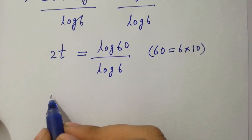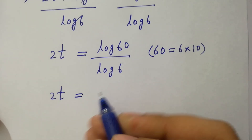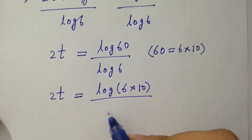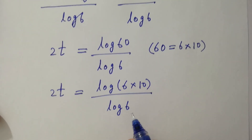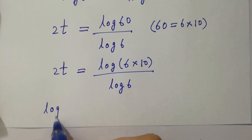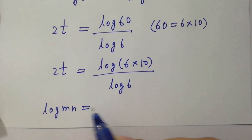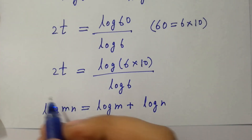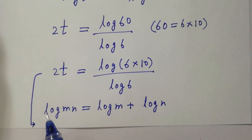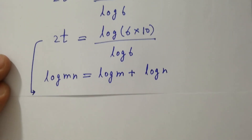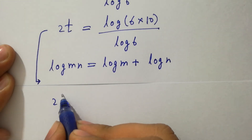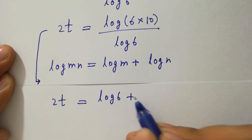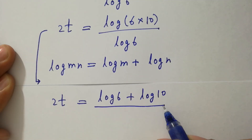So 2t equals log 60 over log 6. Since 60 equals 6 times 10, 2t equals log(6 times 10) over log 6. Since log mn equals log m plus log n, it becomes 2t equals log 6 plus log 10 over log 6.